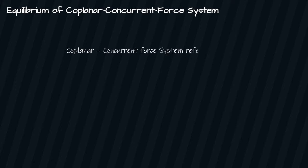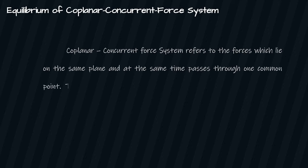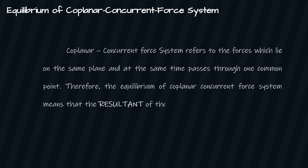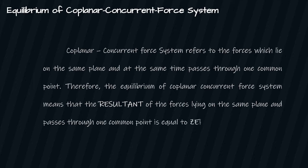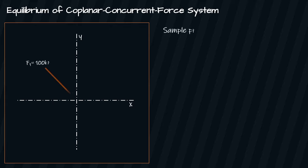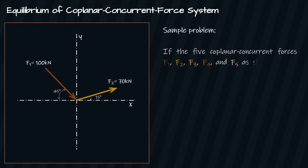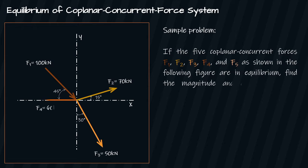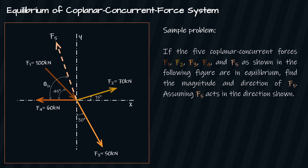A coplanar concurrent force system refers to forces which lie in the same plane and at the same time pass through one common point. Therefore, equilibrium of a coplanar concurrent force system means the resultant of forces lying on the same plane and passing through one common point is equal to zero. Consider the XY plane as shown. If five coplanar concurrent forces F1, F2, F3, F4, and F5 as shown in the figure are in equilibrium, find the magnitude and direction of F5. F5 acts in the direction shown.